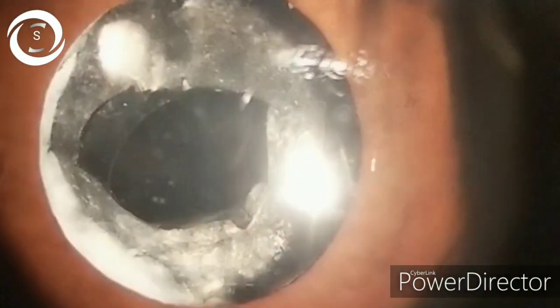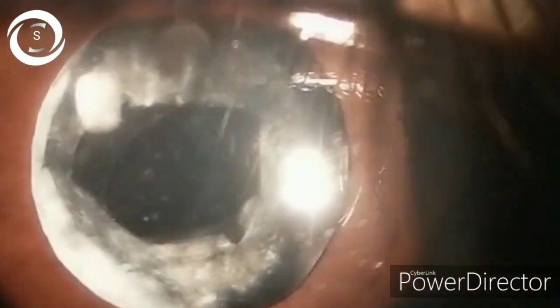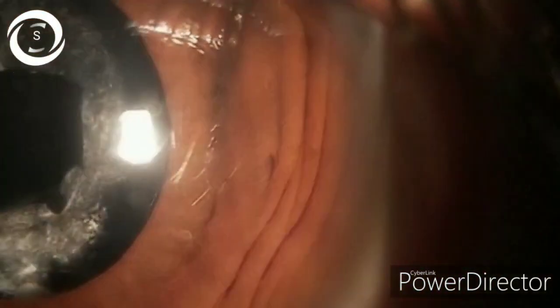During pediatric cataract surgery, we perform posterior capsulotomy and anterior vitrectomy to decrease its formation, because its occurrence is 100 percent.